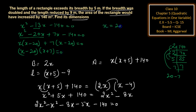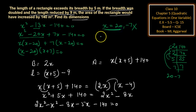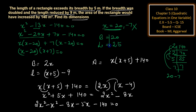So the values of x are 20 and minus 7. We neglect minus 7 because dimensions cannot be negative. Therefore x equals 20, and the breadth of the rectangle is 20 meters, and the length is 20 plus 5, which is 25 meters. That is your answer. I hope it is clear to you. Thank you.